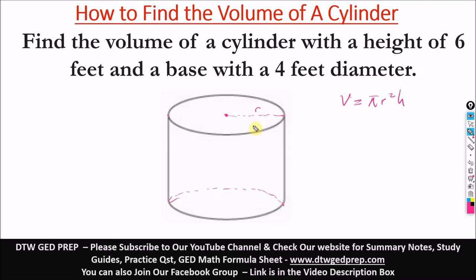So sometimes your question doesn't give you the... For my question here, it says find the volume of a cylinder with a height of six. So the height of the cylinder is from here to here, which is six. This is the height of a cylinder.